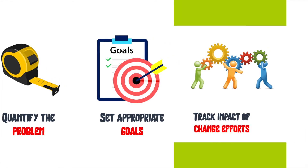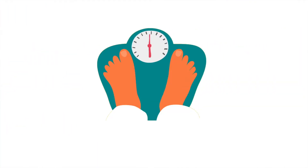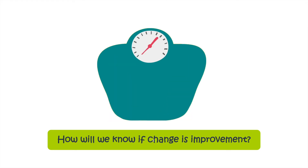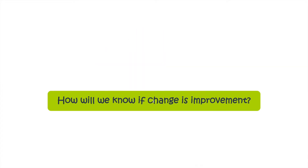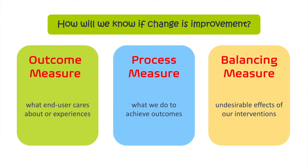Let's take an example. If you are trying to lose weight, how will you know if your change is leading to improvement? Measures will help do that. They are of three categories: Outcome, Process, and Balancing Measures.